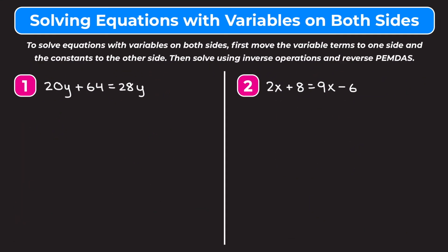In this video we're learning how to solve equations with variables on both sides. At the top of our screen we're going to see some tips. To solve equations with variables on both sides, first move the variable terms to one side and the constants to the other side, then solve using inverse operations and reverse PEMDAS.